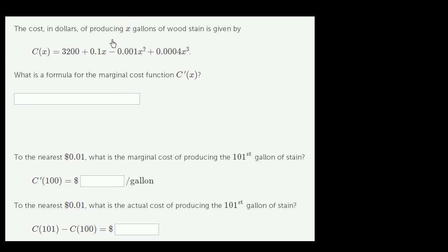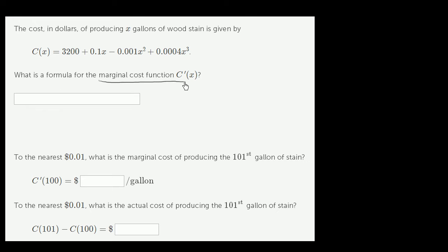The cost in dollars of producing x gallons of wood stain is given by c(x) = 3,200 + 0.1x − 0.001x² + 0.0004x³. What is a formula for the marginal cost function c prime of x?